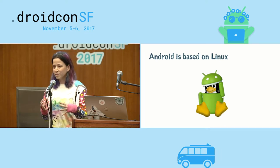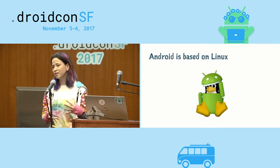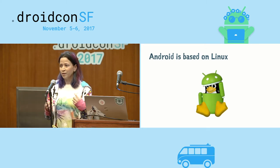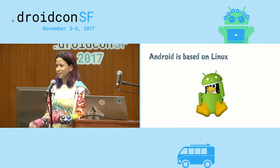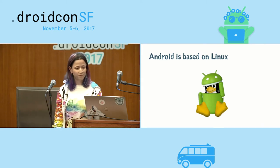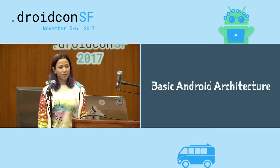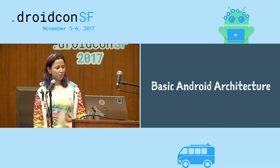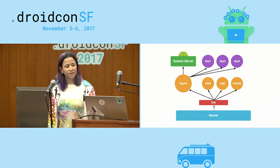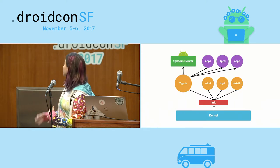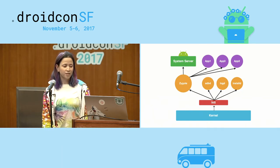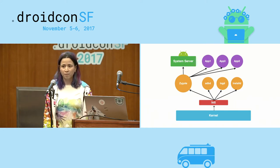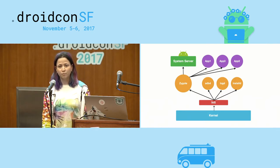In straightforward terms, we cannot take an Android app and run it on a Linux-based computer, and we cannot take a Linux-based app and run it on an Android phone. Today I want to cover the very basics of Android architecture, starting from the bottom and working up to the top: the kernel, the init process, some daemons, mainly the zygote, the system server, and at the top the apps we build and run.